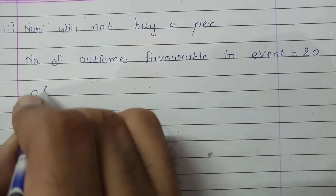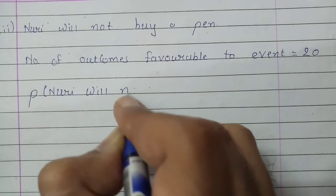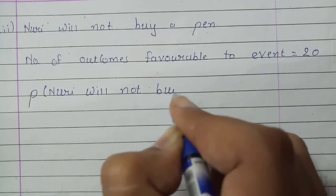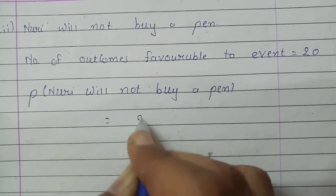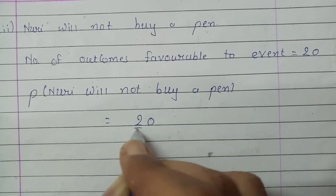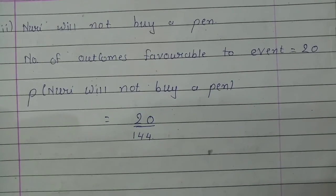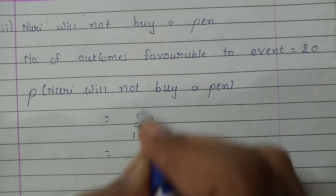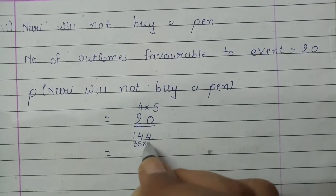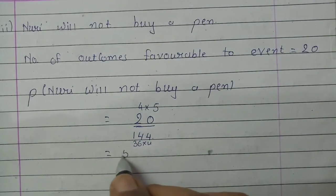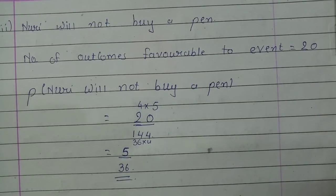Now let us find out the probability that Nuri will not buy the pen. Favorable outcomes are 20 and total outcomes are 144. Reducing by 4: 20 divided by 4 is 5, and 144 divided by 4 is 36, so 4 and 4 get cancelled. The answer is 5 upon 36.